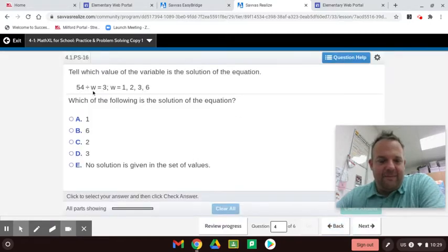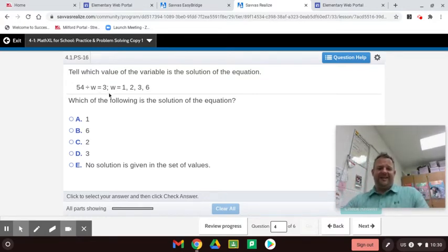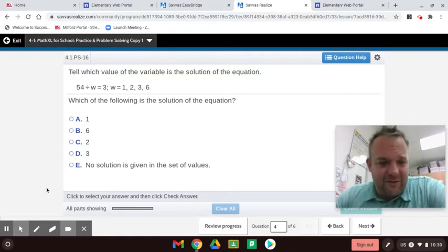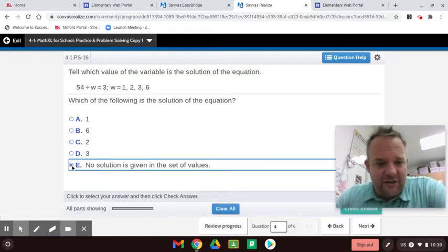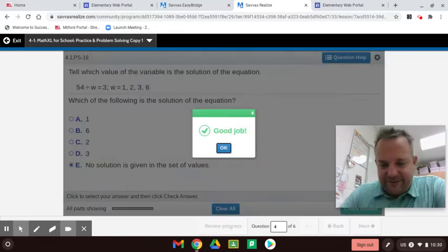54 divided by what equals 3? Well, let's try 1. 54 divided by 1 is 54, so it's not 1. Let's cross out A. 54 divided by 2 is not 3. I know that. 54 divided by 3... well, it's not 3 because 3 times 3 is 9. 54 divided by 6 is 9. It's not 3. So there's no solution here is given in the set values. So what it's saying is if you're just saying these values, the answer is not there.